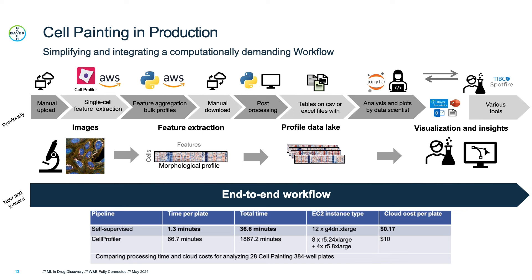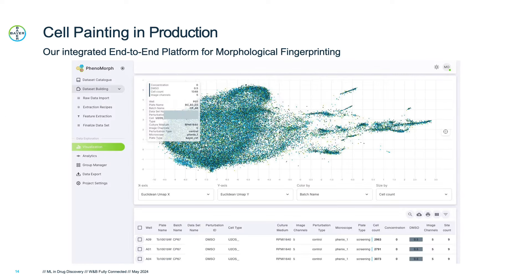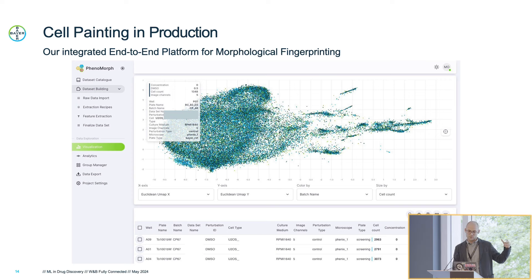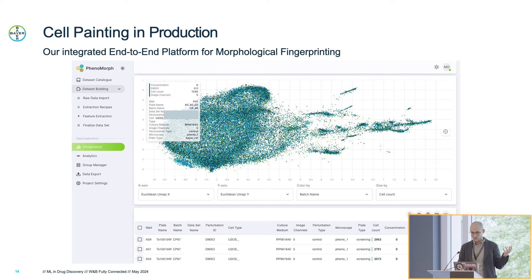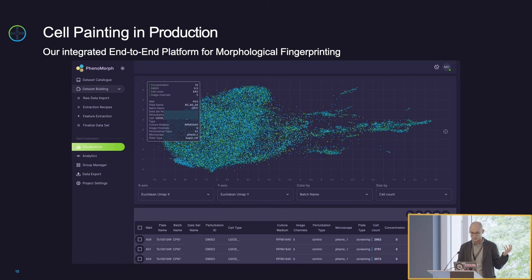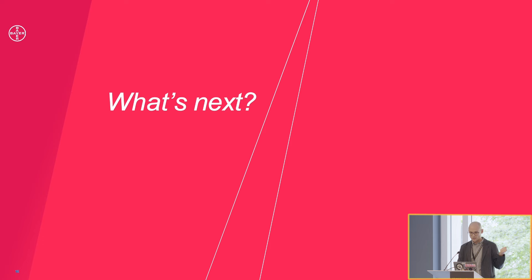Instead of waiting one week for images to be processed, it's just a few hours. We put it all in a nice dashboard where you can trigger the data, browse it, explore it, do anything you want. You can clearly see the big cluster of negatives and smaller clusters that do something — most are artifacts, but some actually have meaning. Soon you can also pick different generations of models from Weights & Biases and compute embeddings with different models. And of course, we're machine learners, so we need a dark mode.